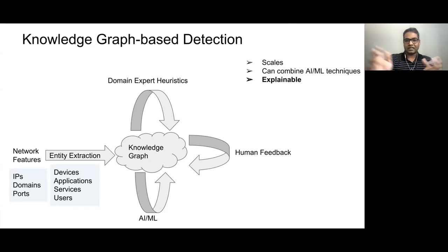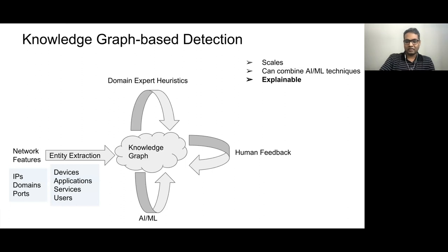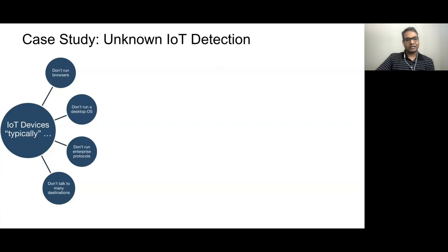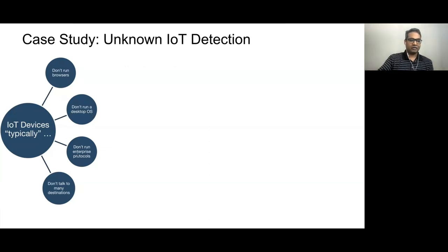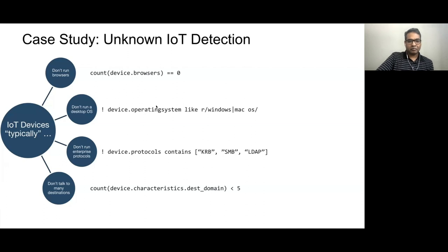The advantage is that it scales well, can combine many techniques, and is explainable — which is really important. I briefly mentioned a blog that talks in much more detail about all these entities and how we extract them — I encourage you to read it. Here's how we use the knowledge graph: say we want to find unknown IoT devices in the network. The domain expert encodes that IoT devices typically don't run browsers, don't run desktop OS, don't run enterprise protocols, and don't talk to many destinations — all encoded using properties already in the knowledge graph.